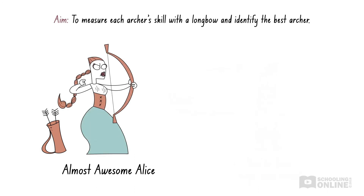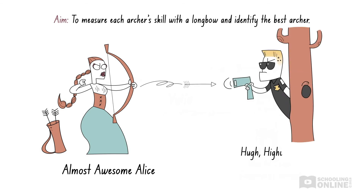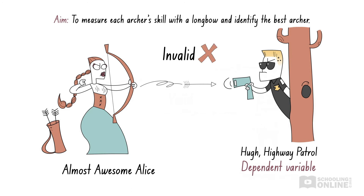But what if we try measuring the speed of each person's arrows using a radar gun? The speed of an arrow has nothing to do with an archer's aim, so it isn't a good indication of shooting skill. The results of such an experiment would be invalid because we've measured something that does not address the aim of the experiment.